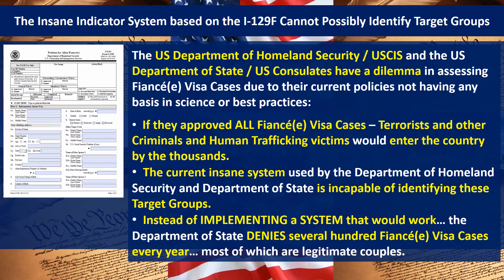The problem is the current insane system they're using is incapable of identifying target groups — almost all target groups. So instead of implementing a system that would work, the Department of State denies several hundred fiancée visa cases every year. The vast majority — around 90 percent — are legitimate couples, just to make it look like the process isn't automatic and to scare away bad people.